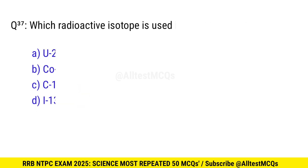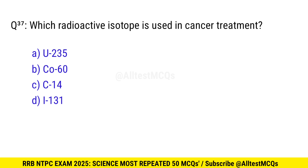Question 37. Which radioactive isotope is used in cancer treatment? Right option is B, cobalt-60.